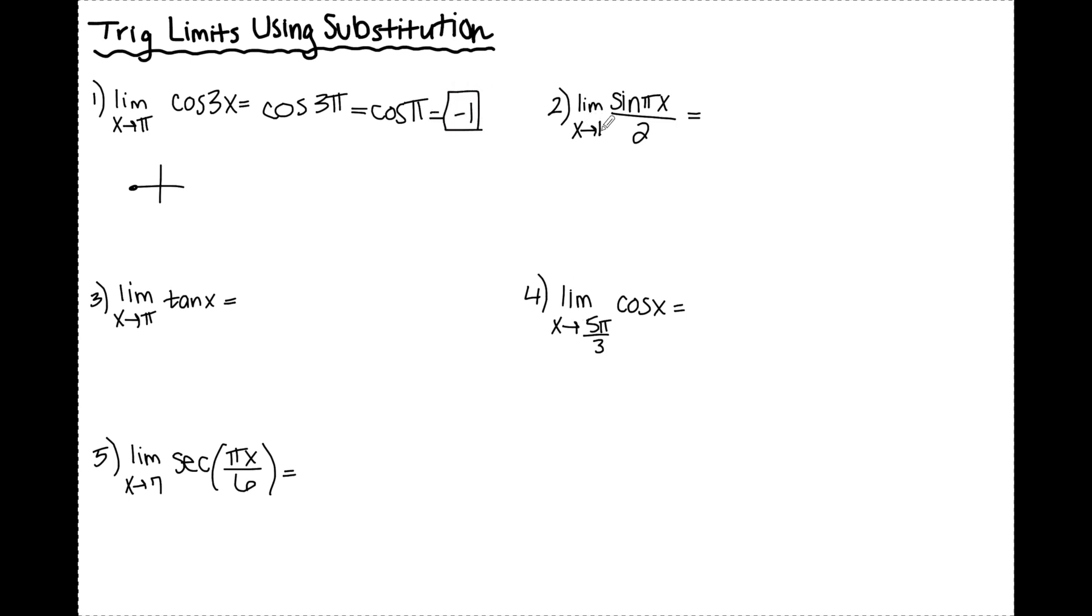Same deal for number 2. I'm just going to plug 1 in for x. π times 1 is just π. So this is just sine of π over 2. And the way this is written, it's that whole thing over 2. We know that sine of π is 0 and 0 divided by 2 is 0.